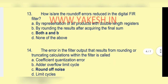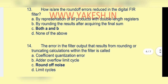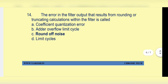How is round-off error reduced in a digital FIR filter? Option c: both a and b — by representation of all products with double-length registers, and by rounding the result after acquiring the final sum. Both options a and b are correct.